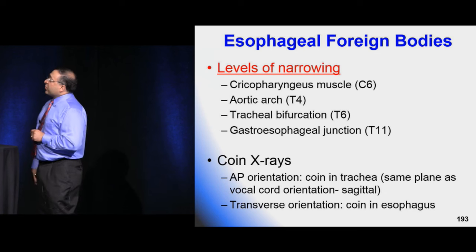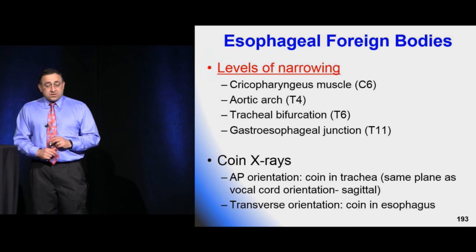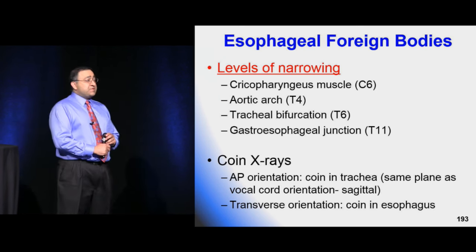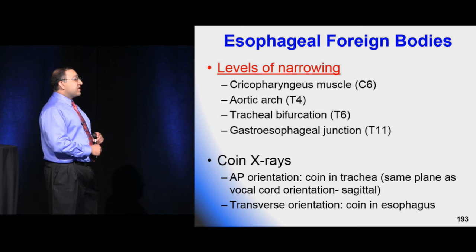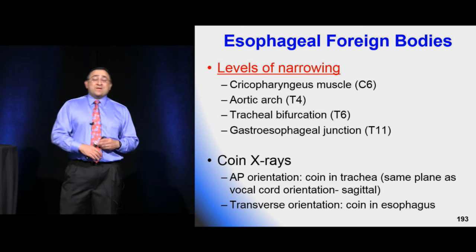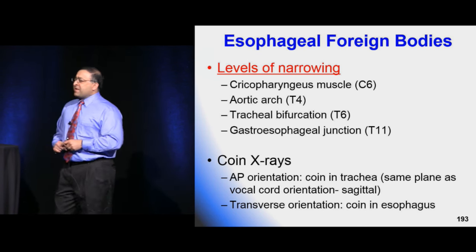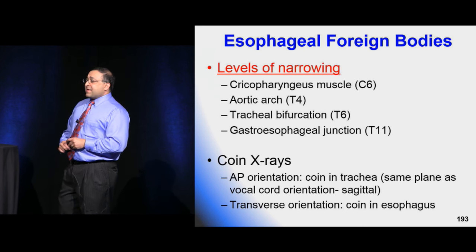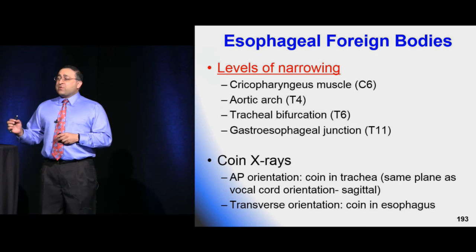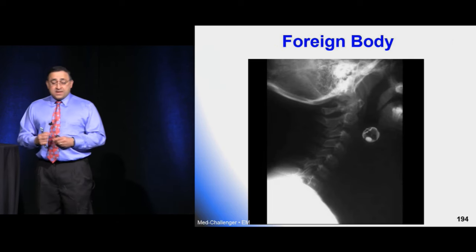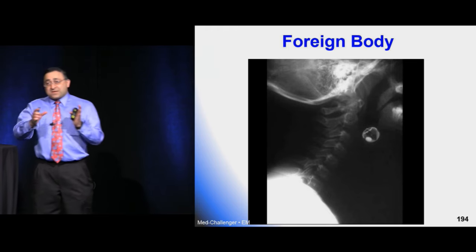There are four classic levels at which esophageal foreign bodies lodge — four means this makes for a great board question: the cricopharyngeus muscle at C6, the aortic arch at T4, the tracheal bifurcation at T6, and the GE junction around T11. You may also get an X-ray of a child who swallowed a coin and need to determine whether it's in the esophagus or trachea.